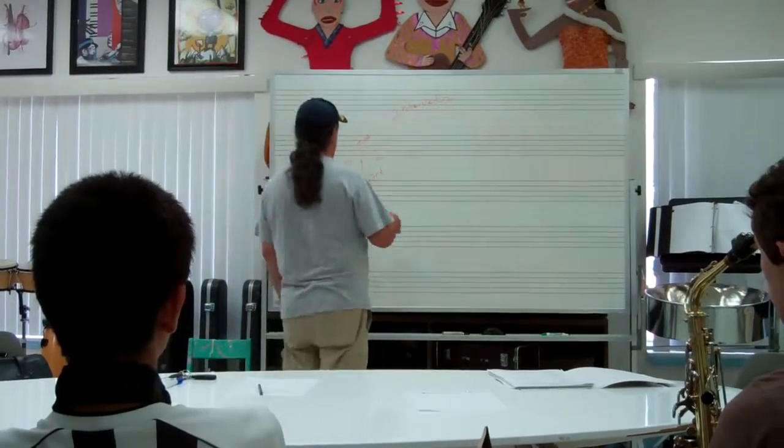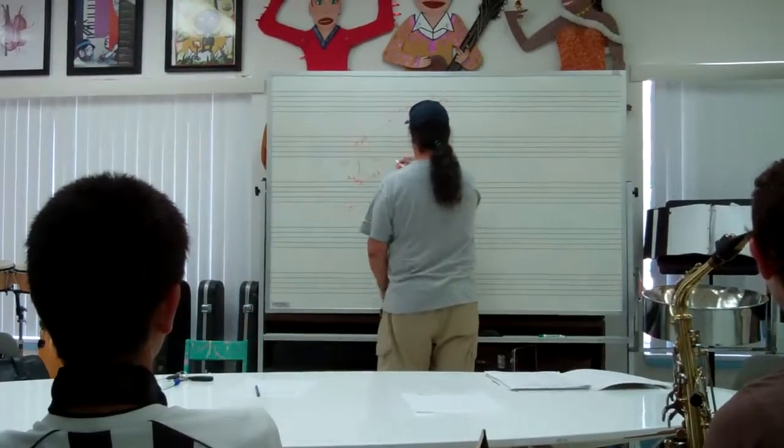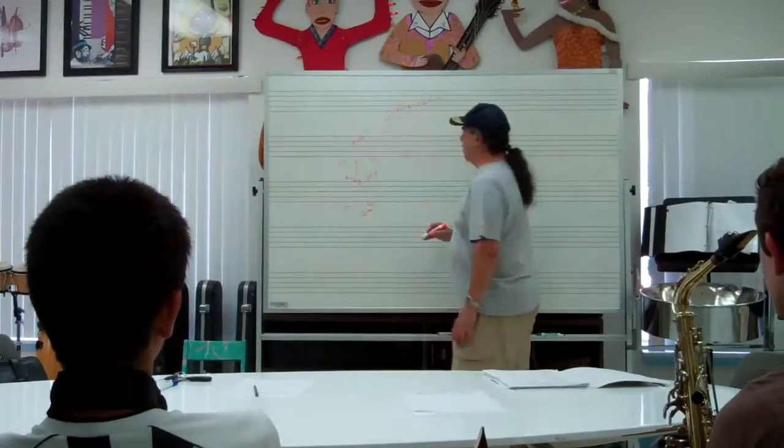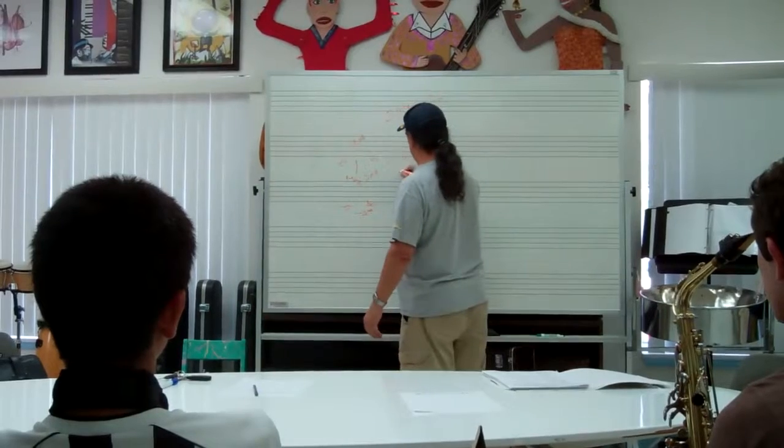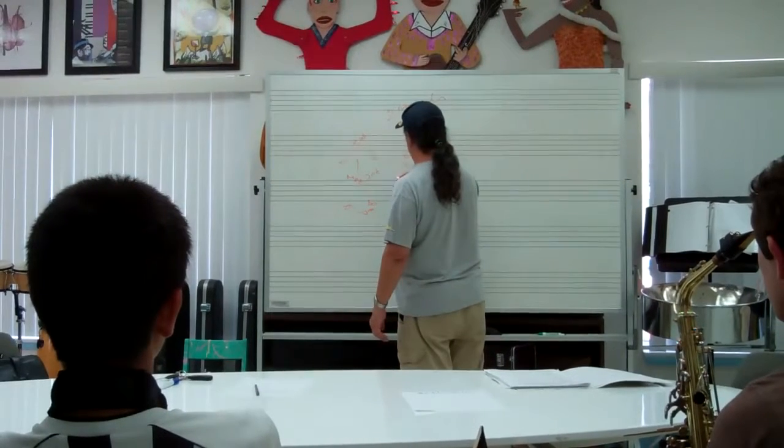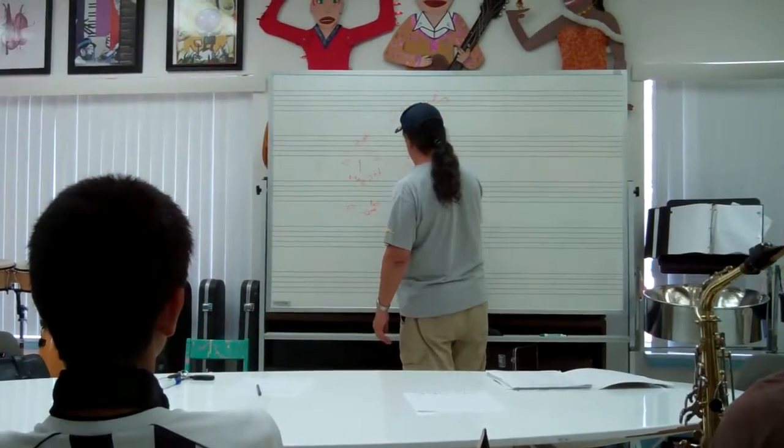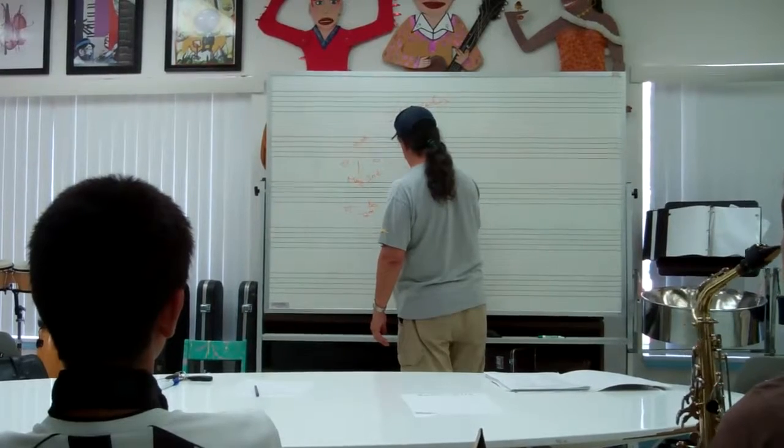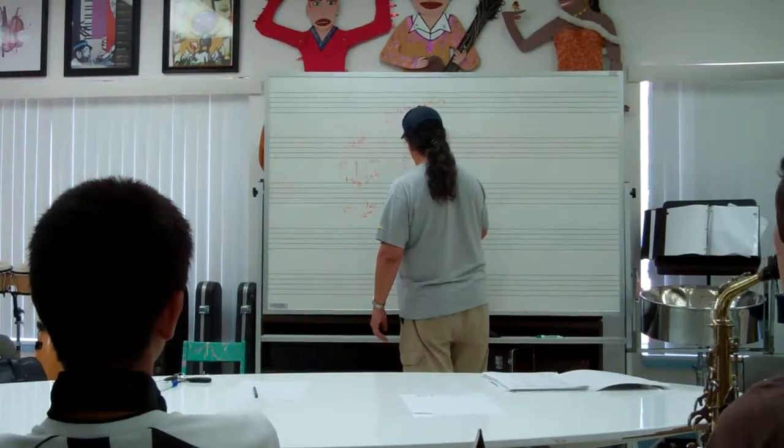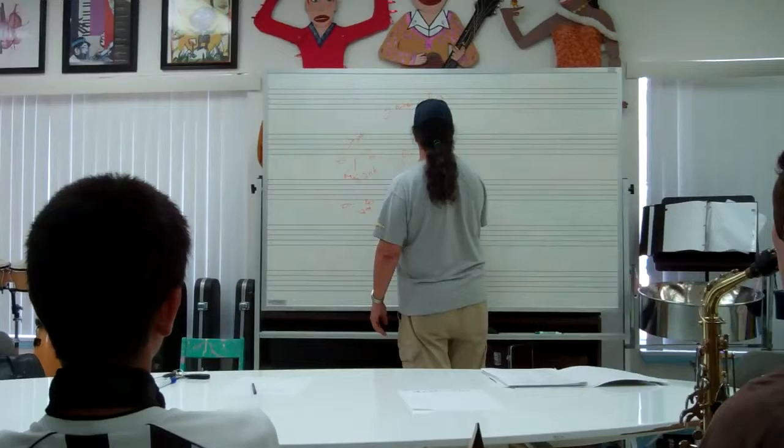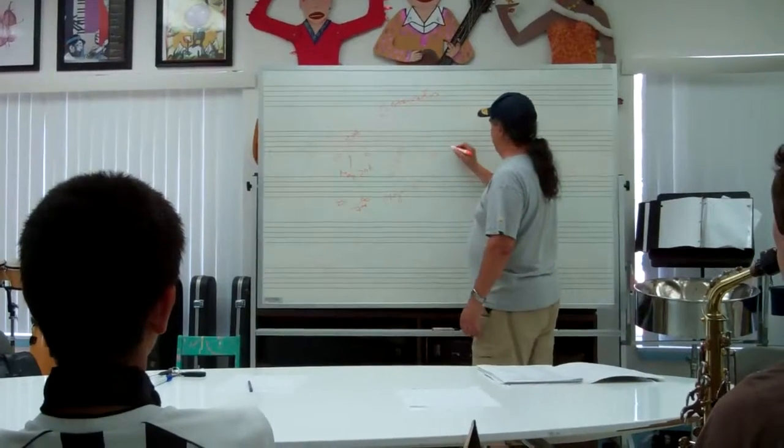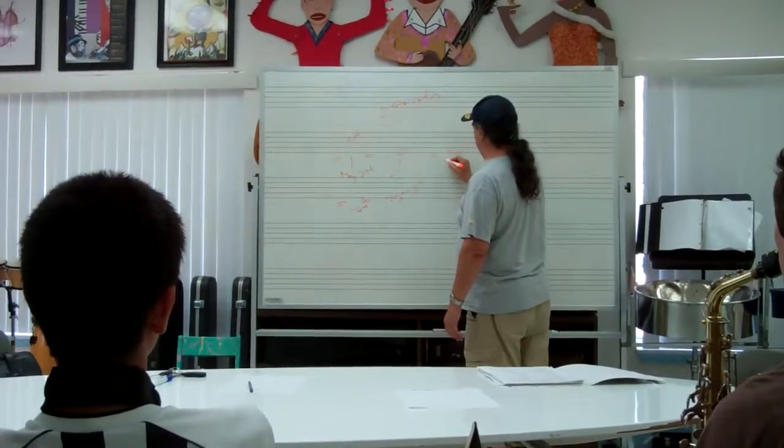So what would C to E be? It spans three notes. C, D, E. So it's going to be a third, right? And because it has two whole steps, it's going to be a major third. And now, so what would a minor third be? E flat. C to E flat, which would be one and a half steps.